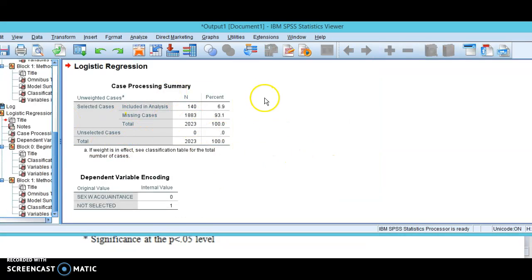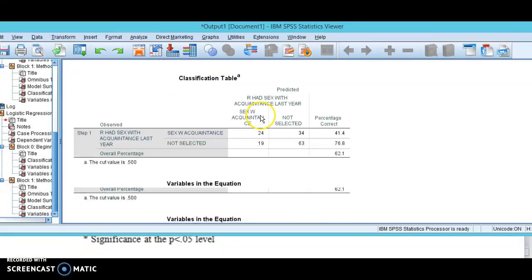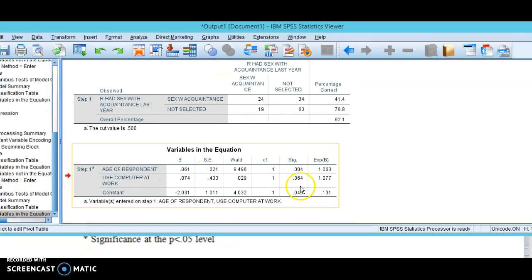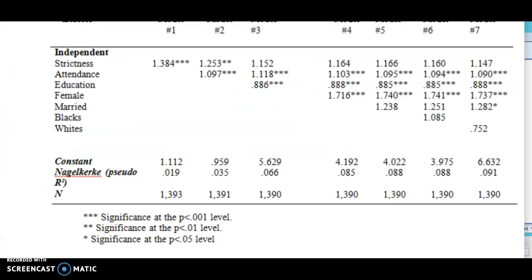Again, you're going to get a new set of logistic regressions. Scroll all the way down. Now you see variables in the equation. I have my work computer variable and my age variable in there again. You're going to be reporting those two exponential B's here on the right, whether they are significant. Turns out this one is not, but you would report that in model two. That's your second model.